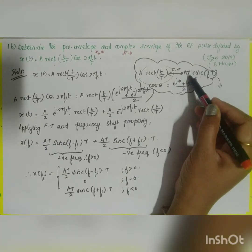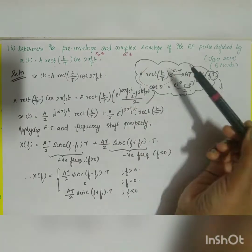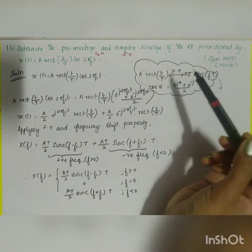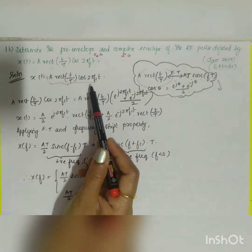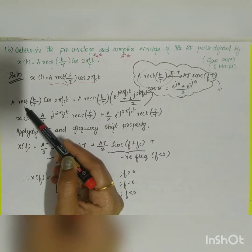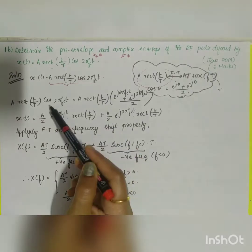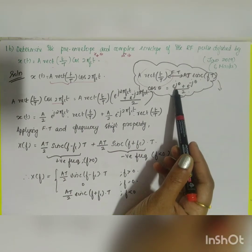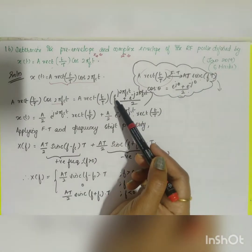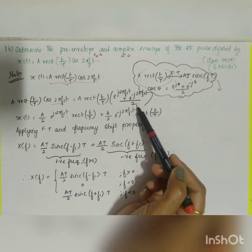The Fourier transform is A·T·sinc(fT), and we know that cos θ = (e^(jθ) + e^(−jθ)) / 2. So we reconfigure the signal: A·rect(t/T)·cos(2π·fc·t) = A·rect(t/T) · [e^(j2π·fc·t) + e^(−j2π·fc·t)] / 2.